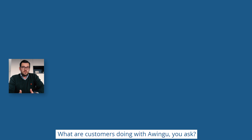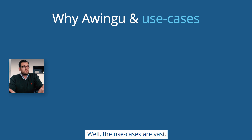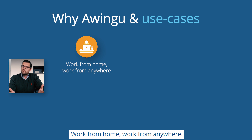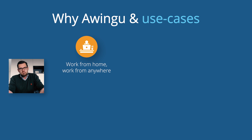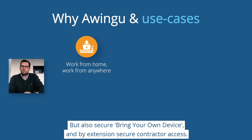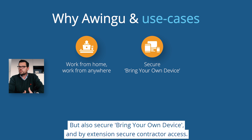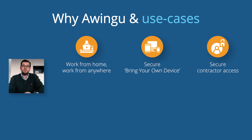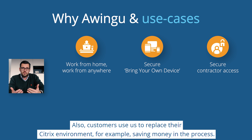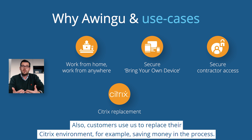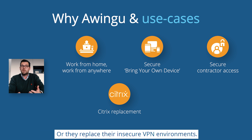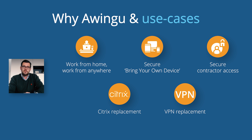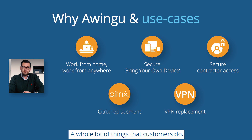What are customers doing with Owingo? Use cases are vast: work from home, work from anywhere, secure bring-your-own device, and by extension, secure contractor access. Customers also use Owingo to replace their Citrix environment — saving money in the process — or they replace their insecure VPN environments.